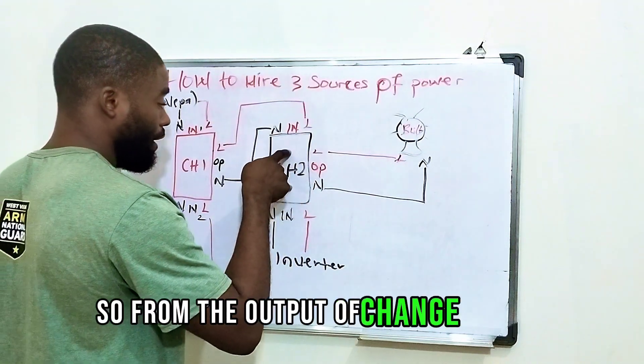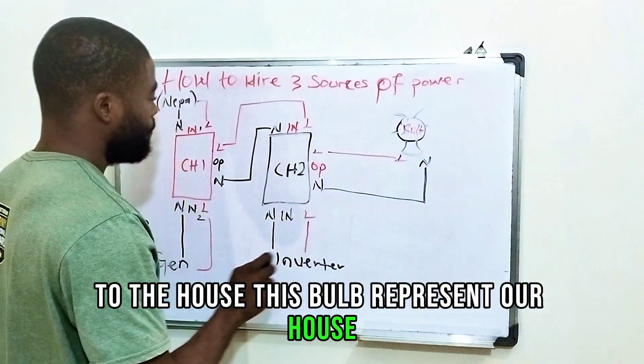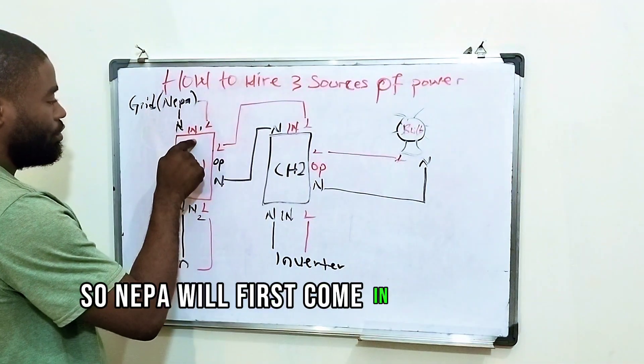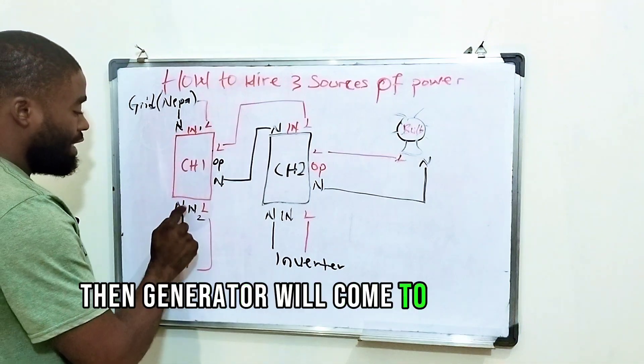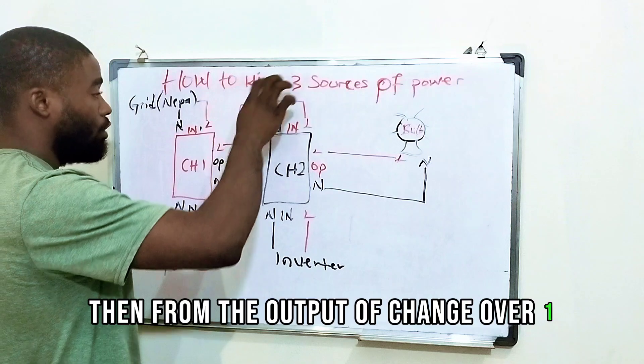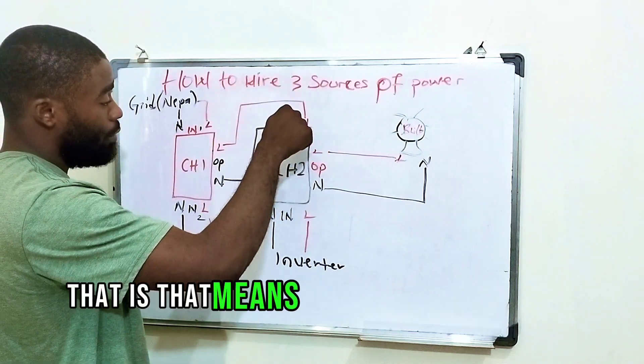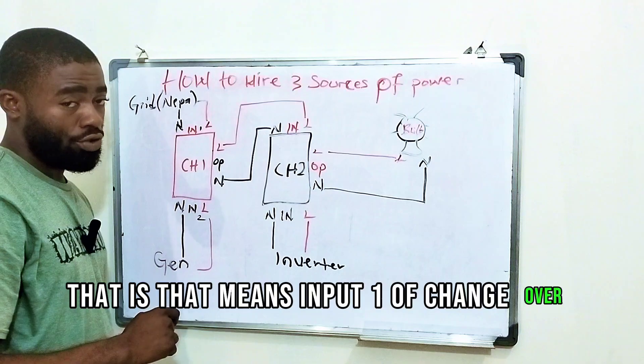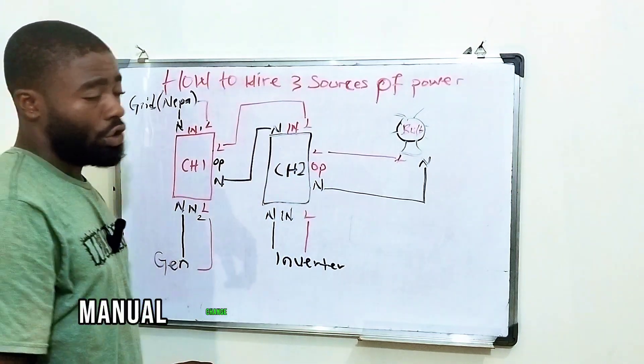So from the output of changeover two to the house. This bulb represents our house. So NEPA will first come in to the input one of changeover one. Then generator will come to the input two of changeover one. Then from the output of changeover one to the input one of changeover two. This is how you do your connection using two manual changeovers.